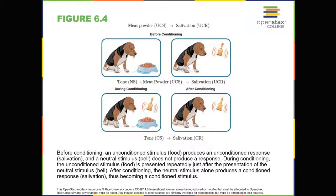When Pavlov paired the tone with the meat powder over and over again, the previously neutral stimulus — the tone — also began to elicit salivation from the dogs. Thus, the neutral stimulus became the conditioned stimulus, or CS, which is a stimulus that elicits a response after repeatedly being paired with an unconditioned stimulus. Eventually, the dogs began to salivate to the tone alone. The behavior caused by the conditioned stimulus is called the conditioned response, or CR. Pavlov's dogs had learned to associate the tone (CS) with being fed, and began to salivate (CR) in anticipation of the food.